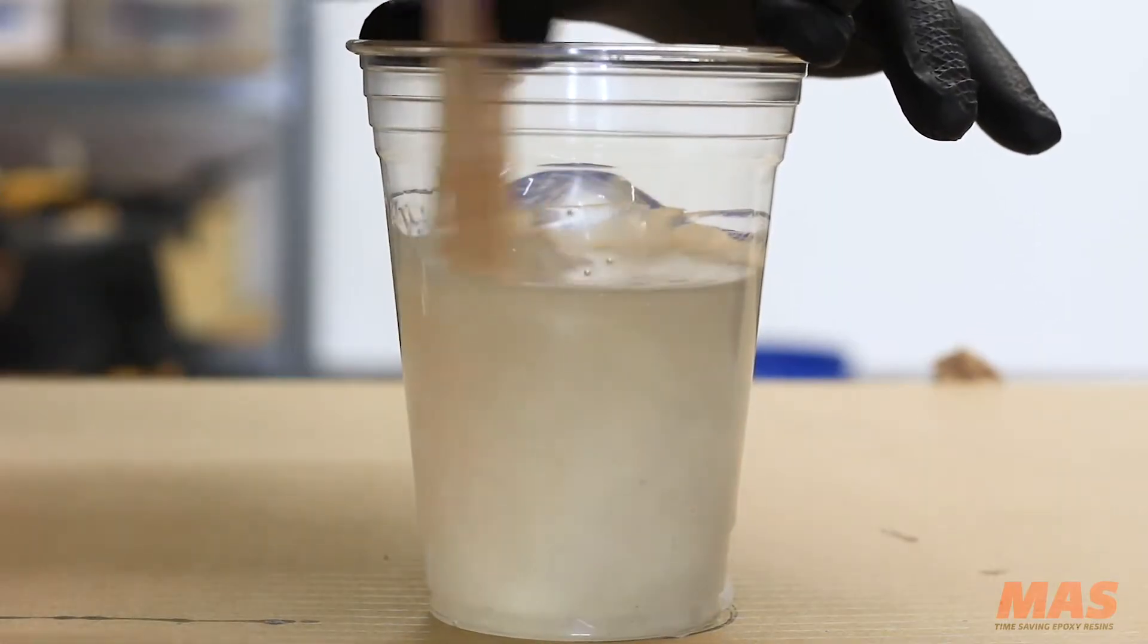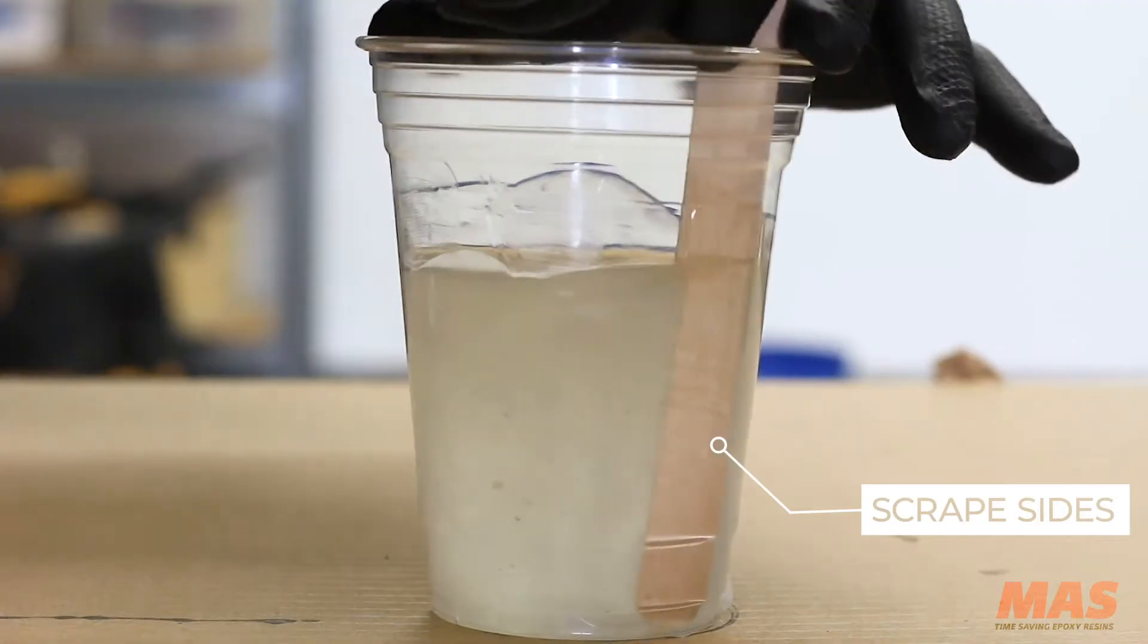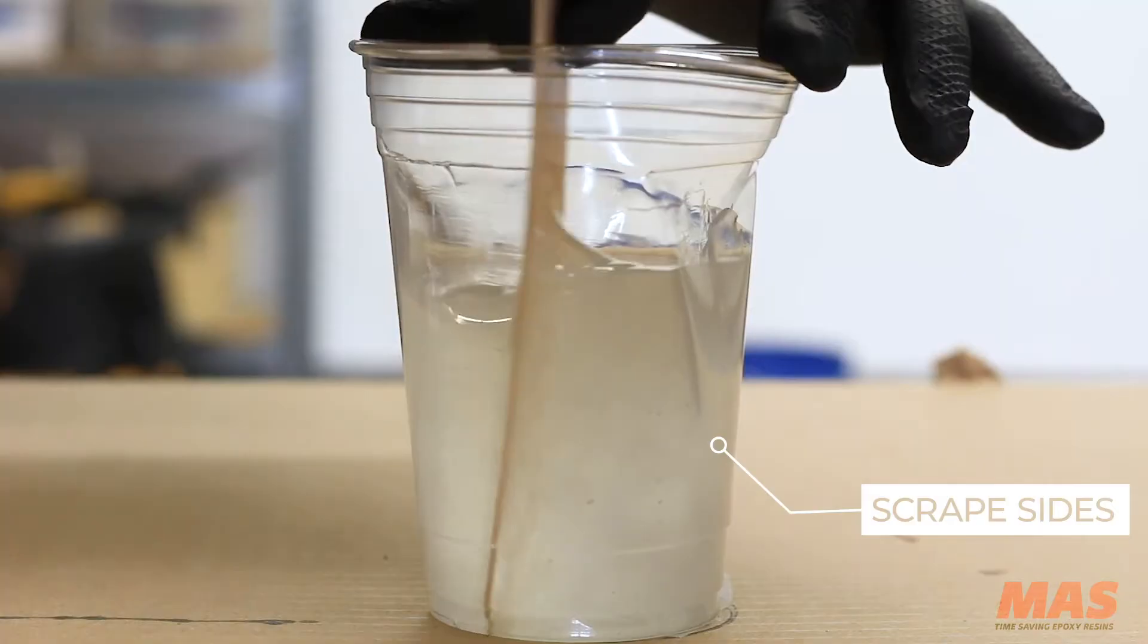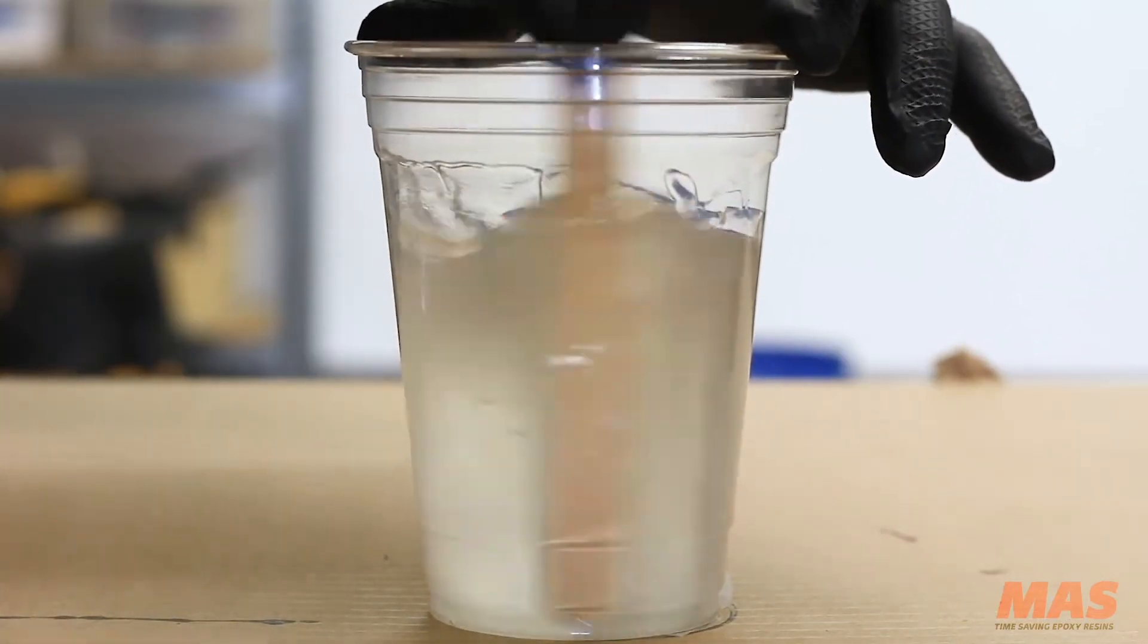Now I can't stress this enough: you need to scrape the side walls and the bottom of the container. If you don't do that, you're gonna have part A or part B just kind of clinging, hanging to the side, and that's just unmixed epoxy that won't cure—it'll be a soft spot in your pour.